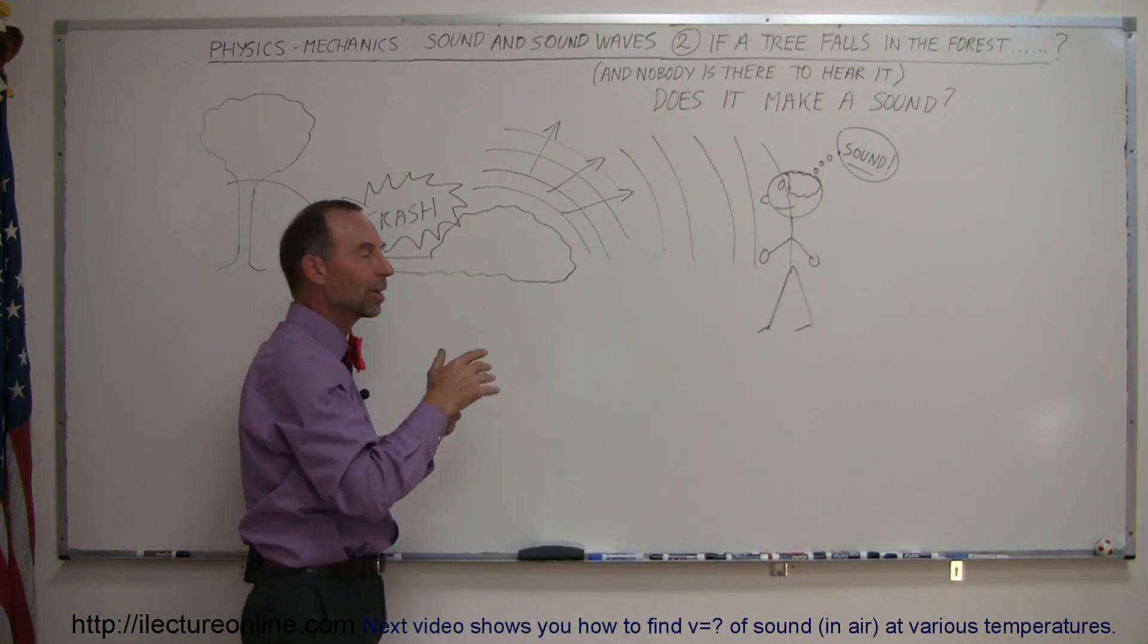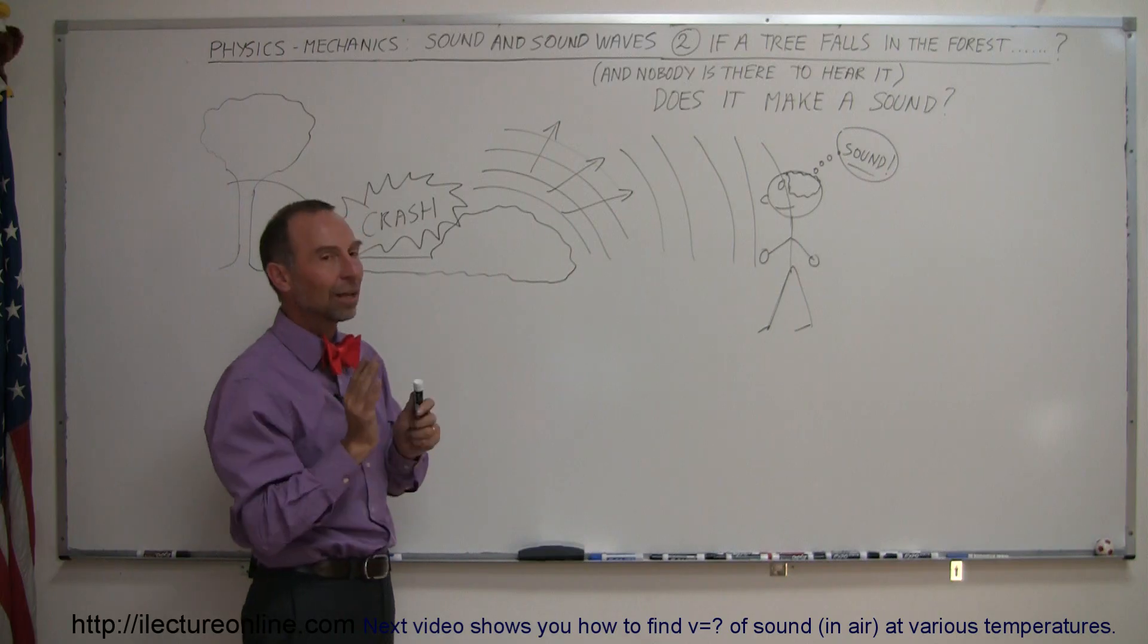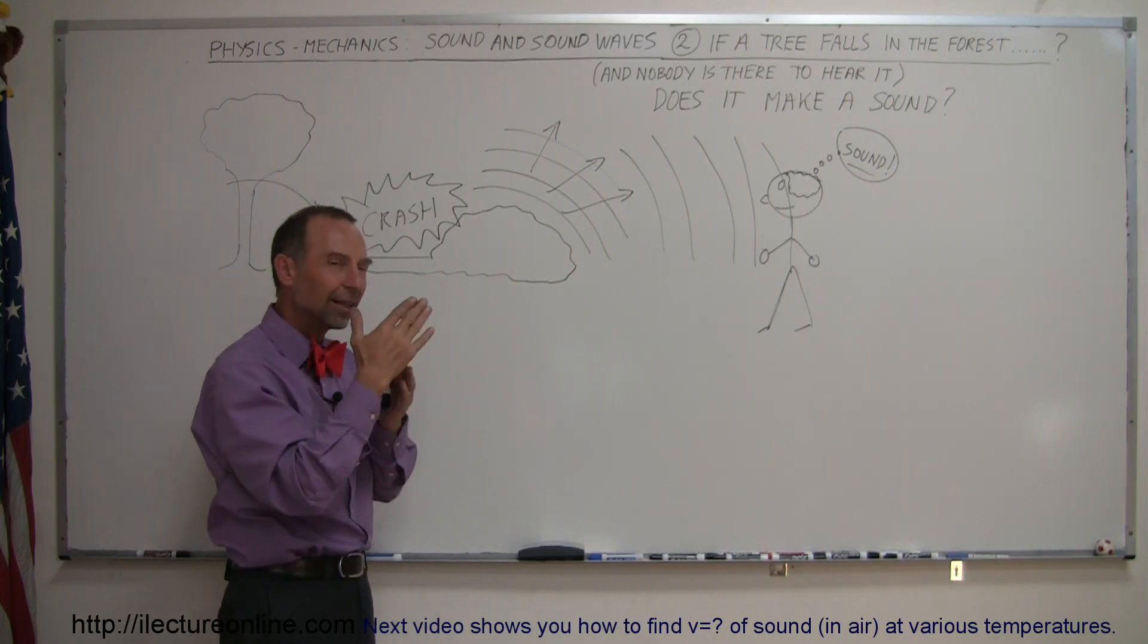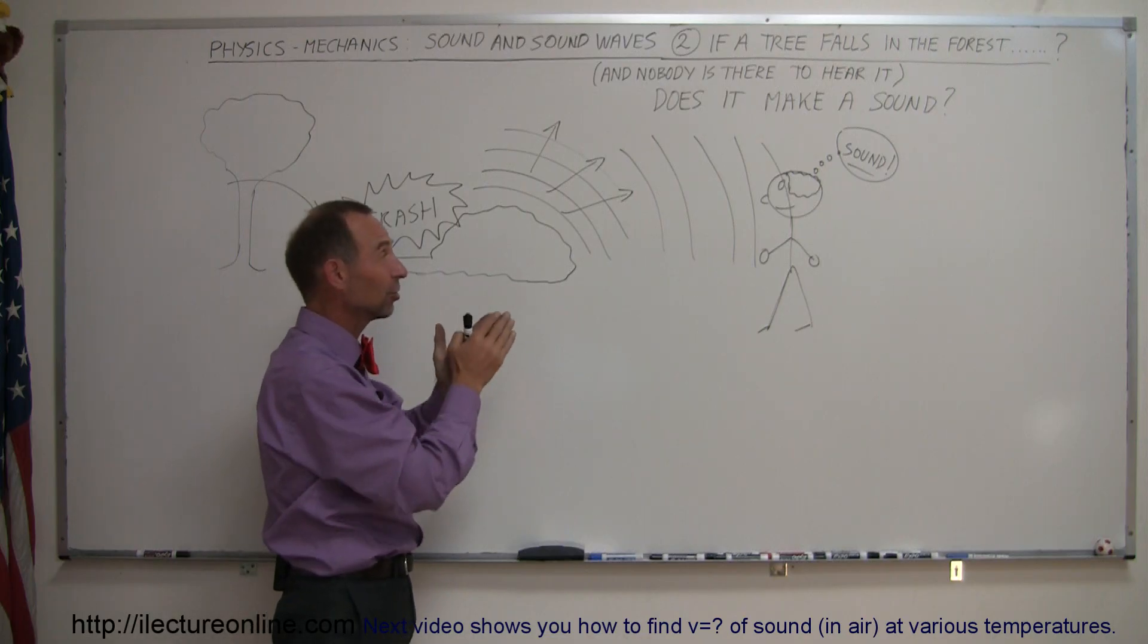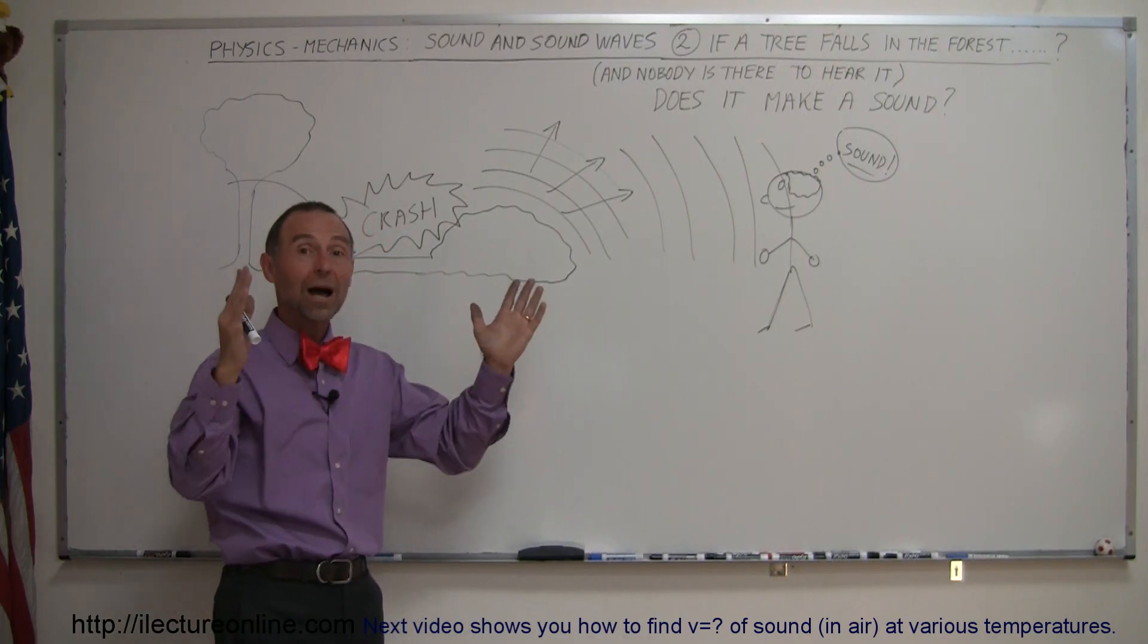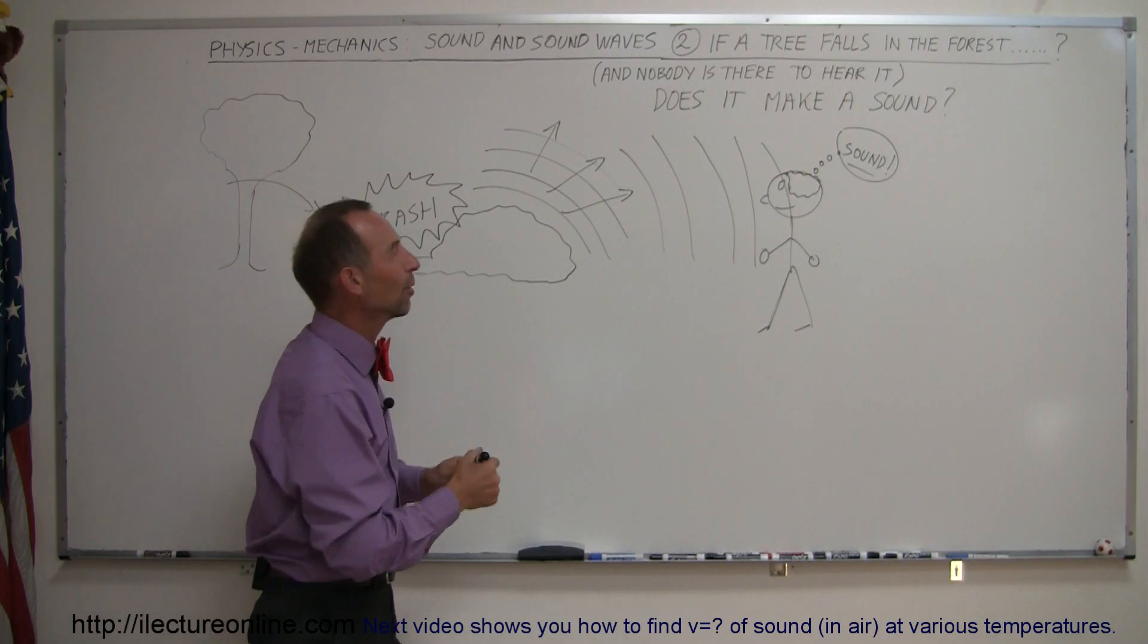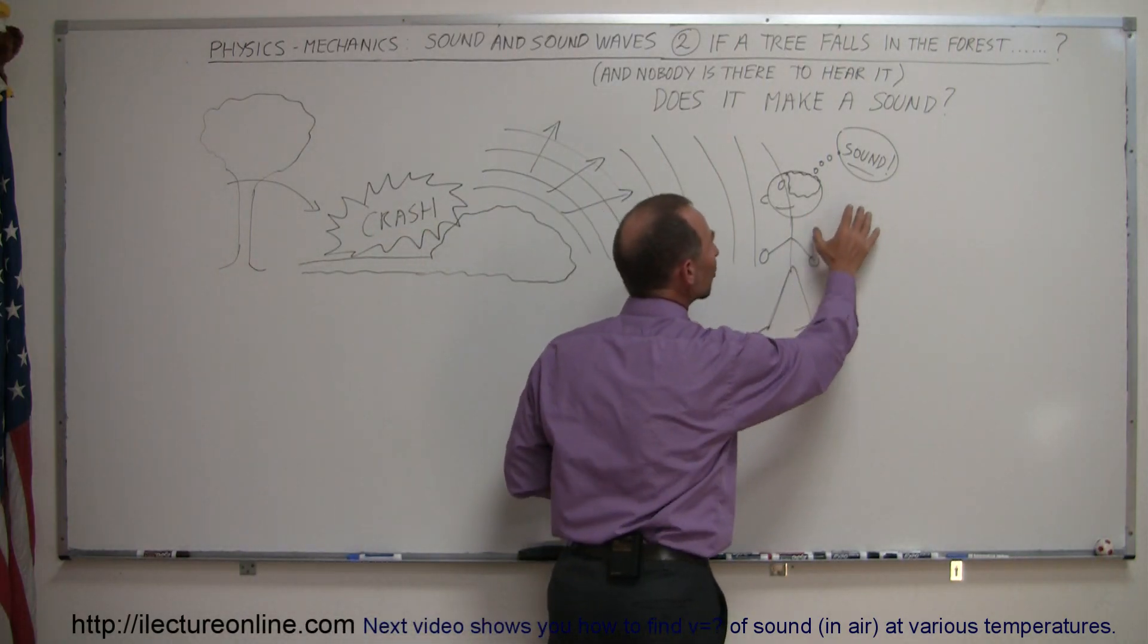And the sound waves then become waves in the liquid in the ear that goes into the cochlea, and that vibrates little cilia, and those cilia vibrations get channeled to the brain. The brain then can say, wow, I heard a tree fall. At that point, we can say a sound was made.